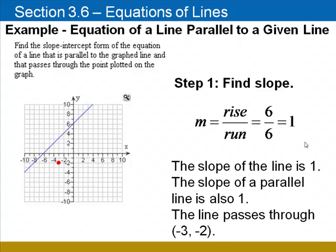Now, since we want our line to be parallel to this line and its slope is 1, the slope of the parallel line will also be 1. So we're trying to find the equation of a line whose slope is 1 and passes through the point (-3, -2). Here we go.